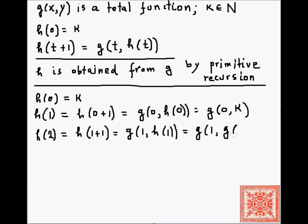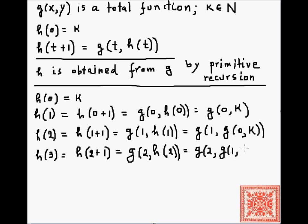h(2) becomes two applications of g, and h(3) is equal to h(2 plus 1), and it will result in three applications of g all the way from g(2) down to g(0, k). So this is g(2, h(2)), and then h(2) from the step above equals g(1, g(0, k)), and so forth.